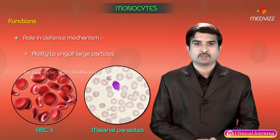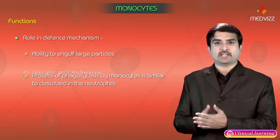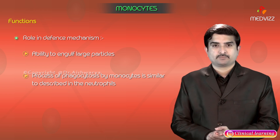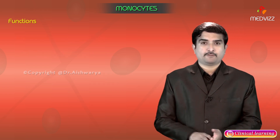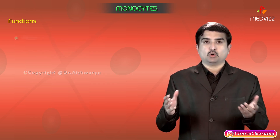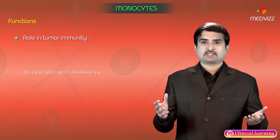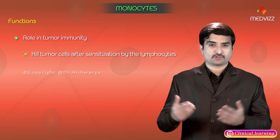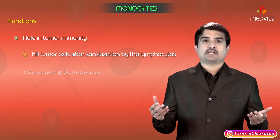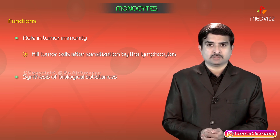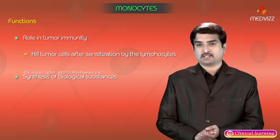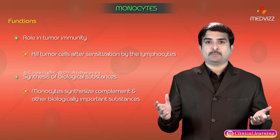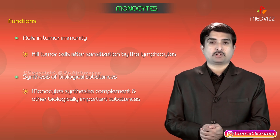Monocytes can also engulf malarial parasites. The process of phagocytosis by monocytes is similar to that of neutrophils. Another important function is their role in tumor immunity — monocytes may kill tumor cells after sensitization by lymphocytes. Monocytes are also responsible for the synthesis of complement and other biologically important substances.